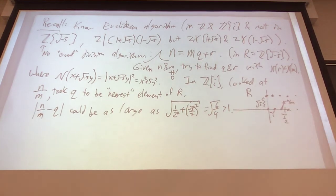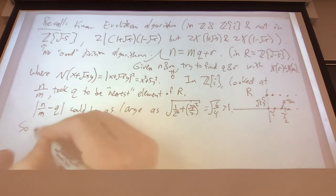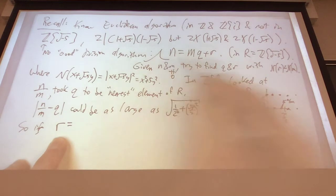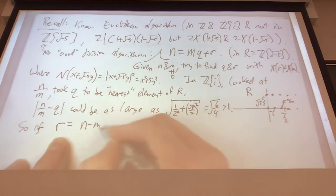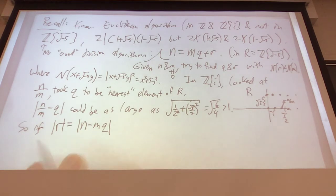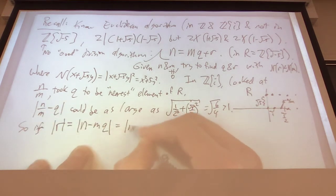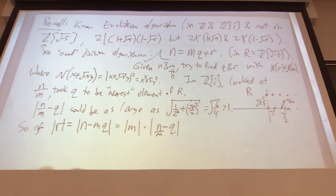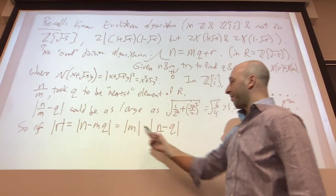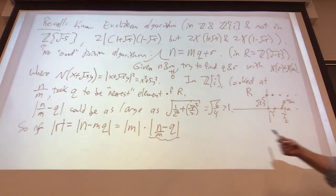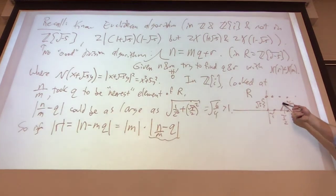If you remember what we did: R is supposed to be N minus MQ. So the absolute value of R is the absolute value of N - MQ, which equals |M| times |N/M - Q|. I'm factoring out an M. And this could be bigger than 1 — there's no better Q if you're right in the middle of this lattice.